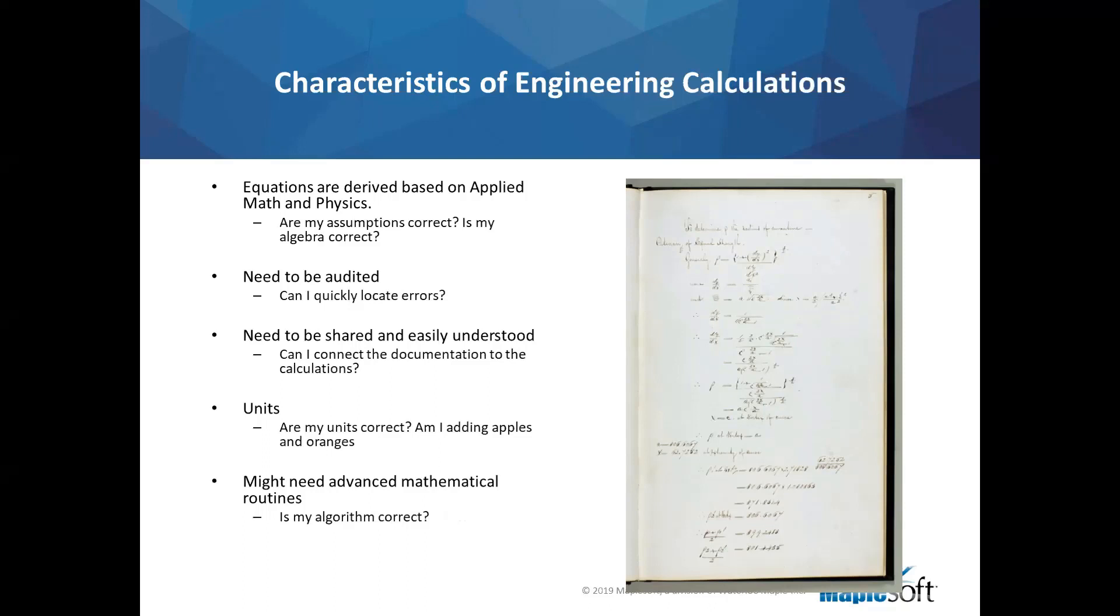Given those characteristics, an engineer who wants to minimize risk needs to ask themselves a number of questions. If you're deriving equations, are your assumptions correct? Have you made an error when manipulating any equations by hand? When the calculations are being audited, either by you or someone else, can they be followed easily? Are the equations easy to understand? Can you quickly spot and resolve errors early in the calculation process? If you're using units, are your calculations dimensionally correct - are you adding apples and oranges? If you need advanced math, you should ask if any code you've written or are using works under a wide variety of conditions - has it been stress tested?